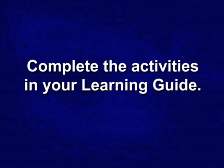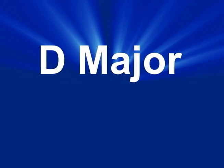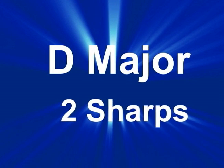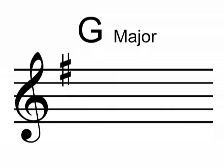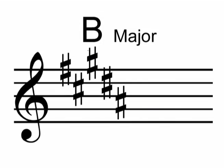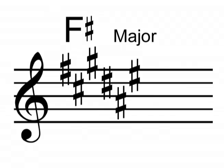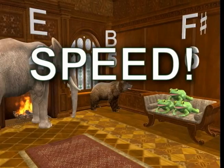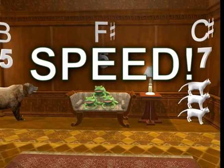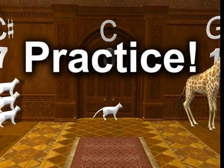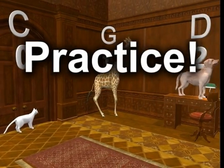Please complete the activities for this lesson in your learning guide until you can look at the name of any key and instantly know the number of sharps in that key. Conversely, practice until you can look at the number of sharps in the key signature and instantly know the name of the key. In this course, to score 100% is not good enough — you must also develop speed. That comes with practice. Have fun practicing.